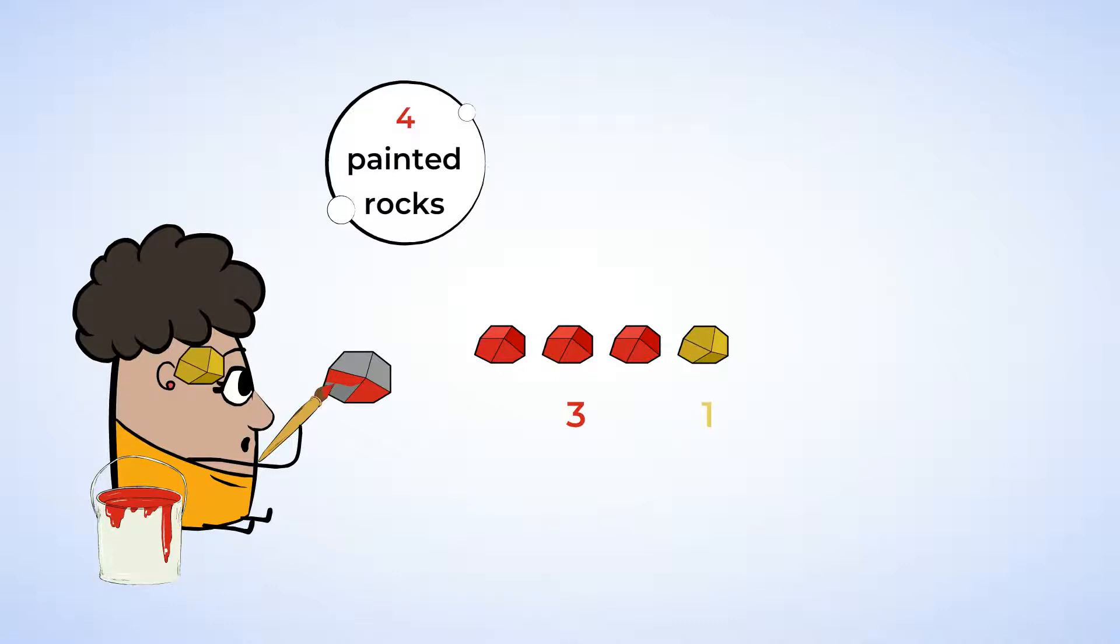Now that we've flipped one over, I wonder how many rocks Latifah has in total. We can add three and one together, or we can count to find the total. One, two, three, four. Four rocks still. That's because three and one make four.